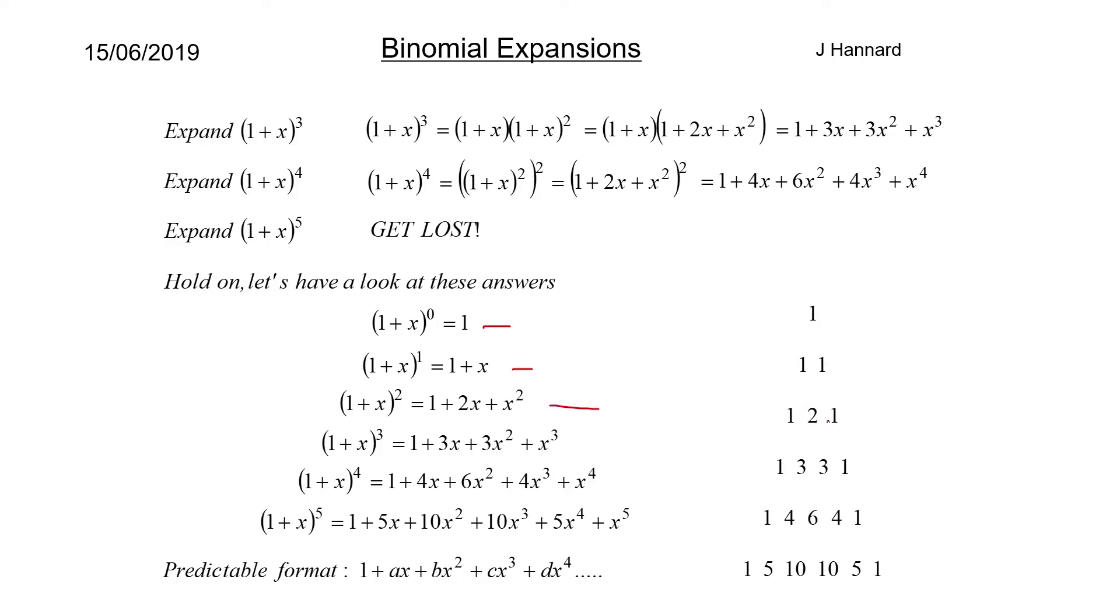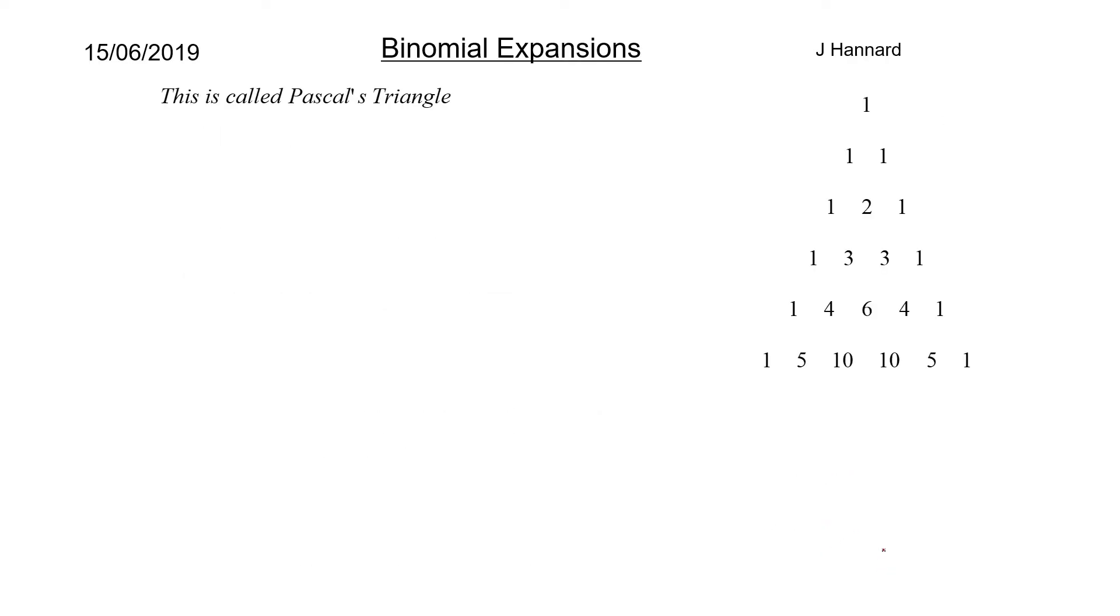So we've got 1, then 1 1, then 1 2 1, then 1 3 3 1, then 1 4 6 4 1, then 1 5 10 10 5 1. And that is called Pascal's Triangle.